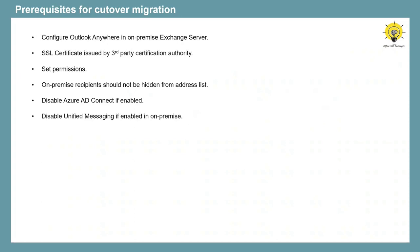If unified messaging is enabled on-premise, you need to disable it. And if you are planning to migrate on-premise security groups, you need to create mail-enabled security groups in Office 365. These groups will be empty mail-enabled groups, and once migration is done, the membership of the on-premise groups will be updated in Office 365 security groups automatically. We need to create empty security groups in Office 365 because cutover migration cannot provision security groups in Office 365. The membership of these groups will be updated automatically during the migration process.